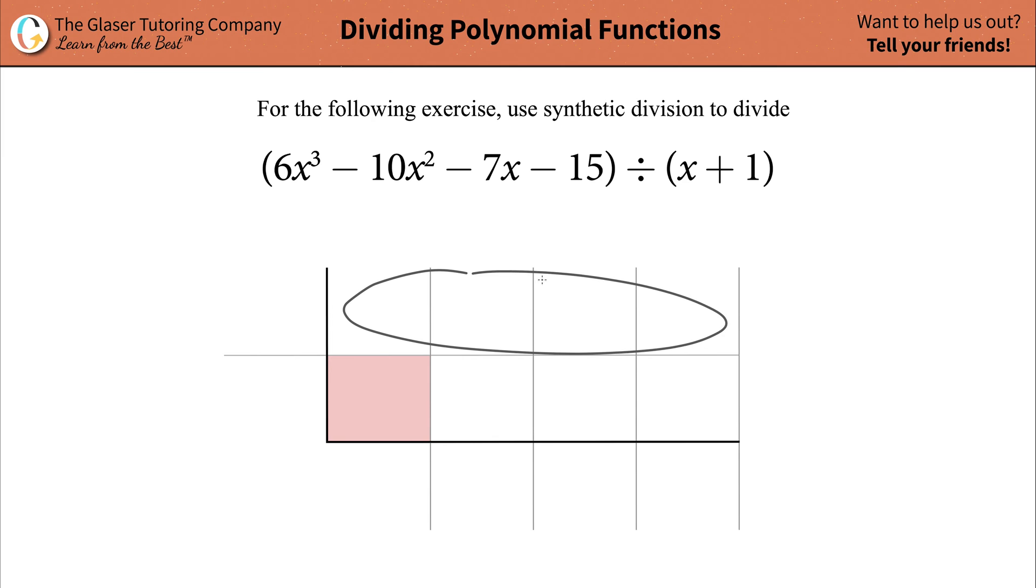The dividend is always the term that comes to the left-hand side of that division symbol. It's the term that you're having something being divided into. This one is called the divisor, and when you find the answer, it is the quotient.